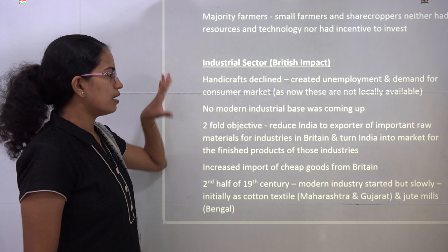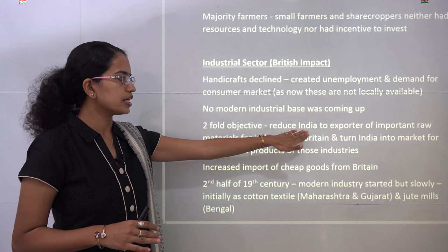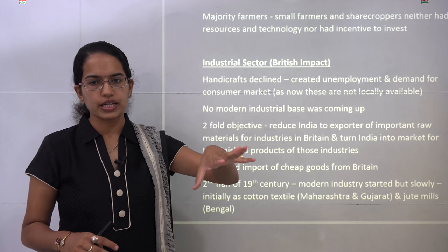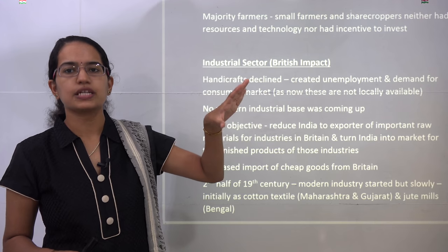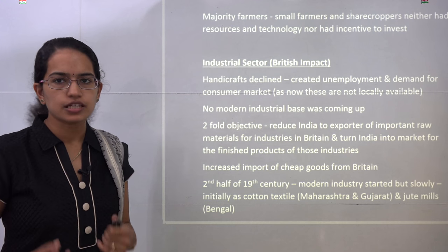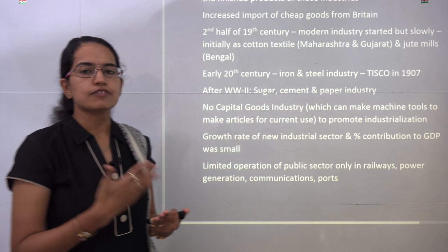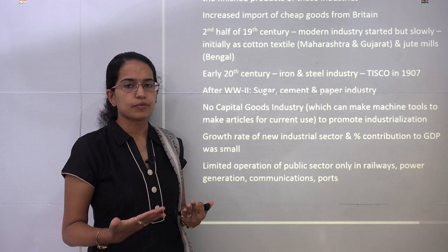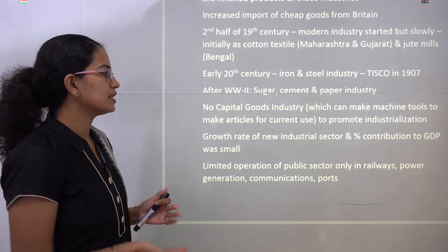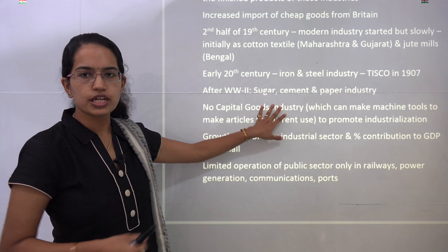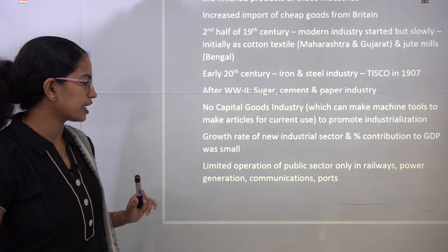The idea of bringing industries to India was twofold: first, to reduce India to an exporter of raw materials to Britain, and second, India should import finished products to meet local needs. No capital goods industry came into being, so no big machine tools were made for future industrialization. The growth rate of the industrial sector was very poor and the contribution to GDP was very less.